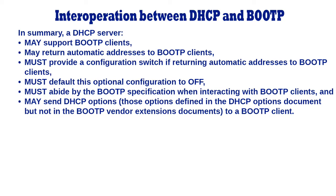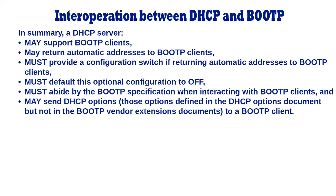In summary, a DHCP server: 1. May support BootP clients. 2. May return automatic addresses to BootP clients. 3. Must provide a configuration switch if returning automatic addresses to BootP clients. 4. Must default this optional configuration to off. 5. Must abide by the BootP specification when interacting with BootP clients. 6. May send DHCP options — that is, those options defined in the DHCP Options document but not in the BootP Vendor Extensions document — to a BootP client.